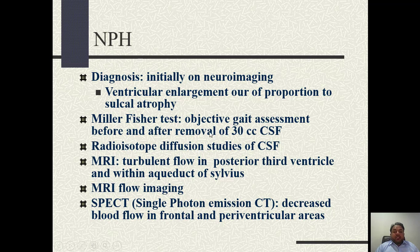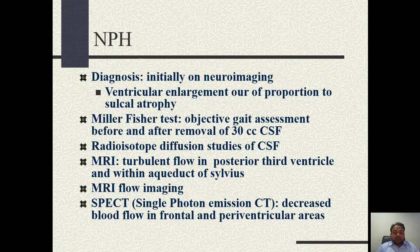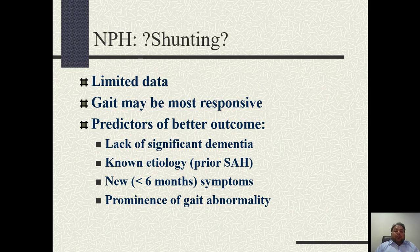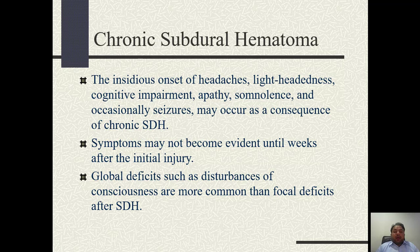The patient's gait is assessed before LP. Then LP is performed and 30 cc of CSF is removed, and gait is reassessed for improvement. If there is improvement, the patient is labeled as normal pressure hydrocephalus. MRI is also helpful in diagnosing normal pressure hydrocephalus. The treatment of choice is lumboperitoneal shunting.